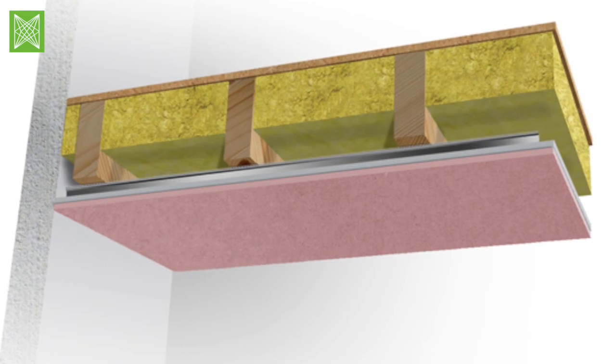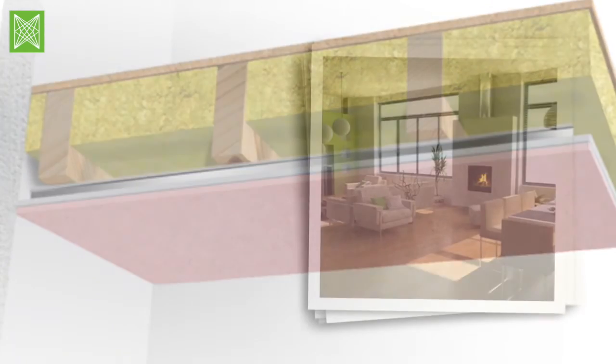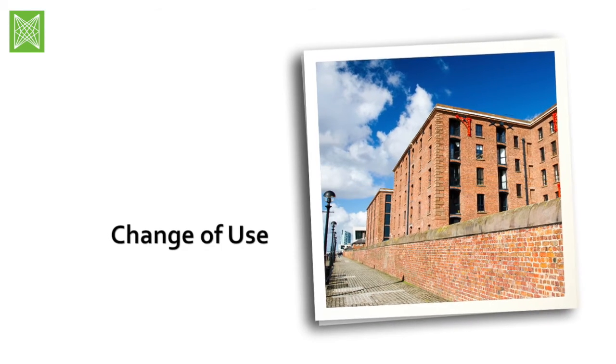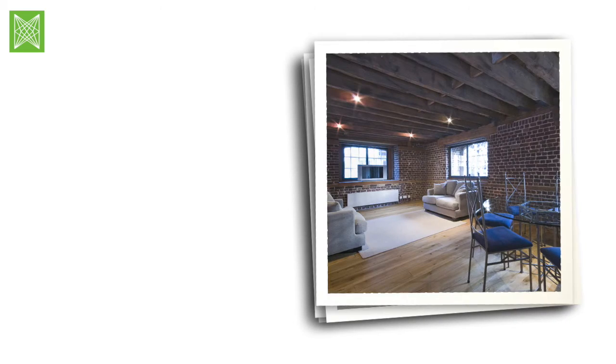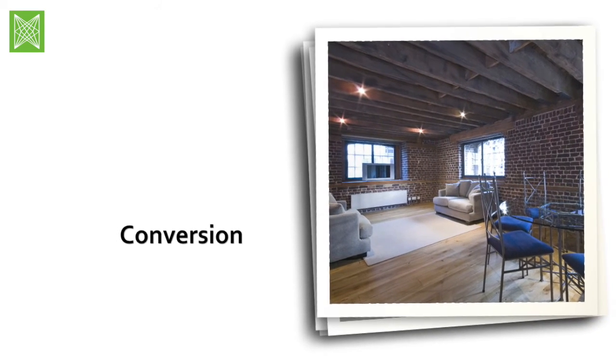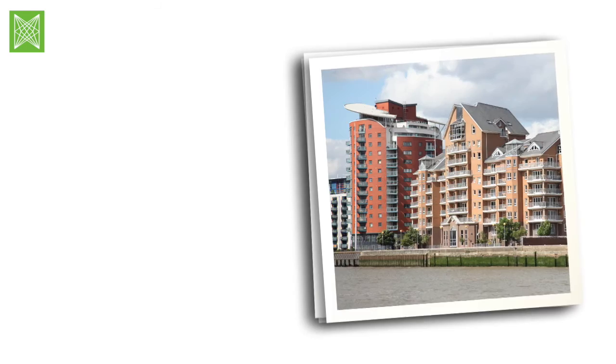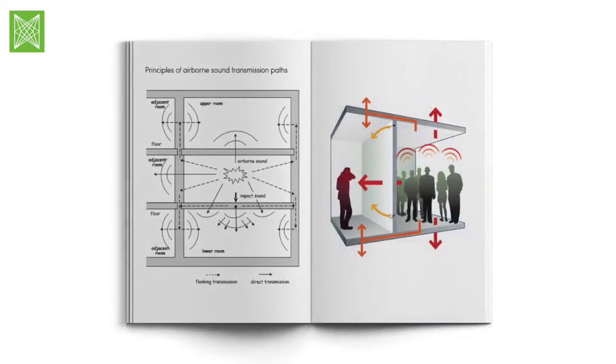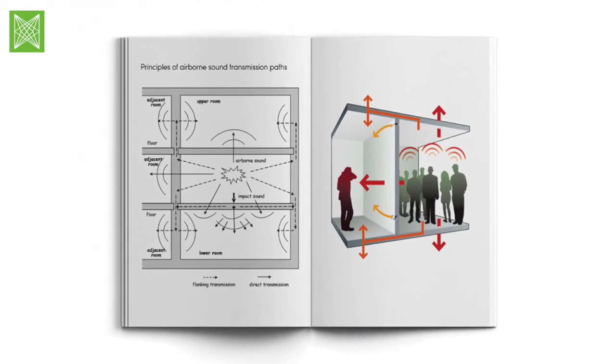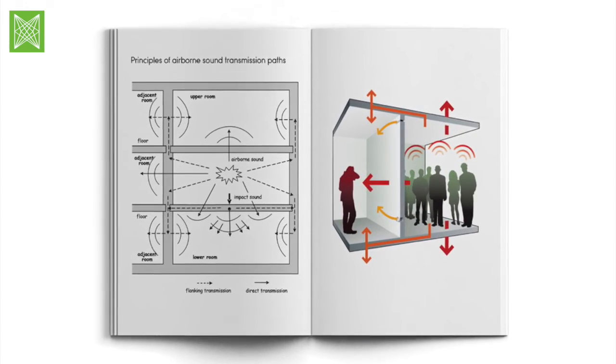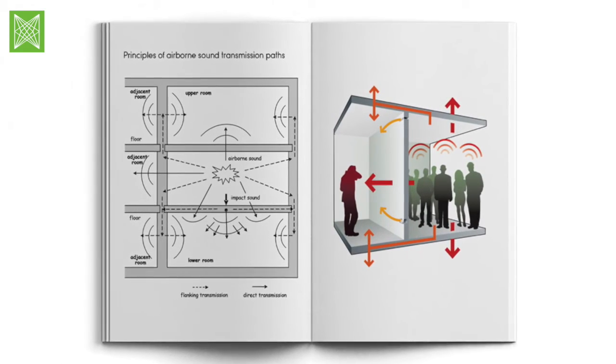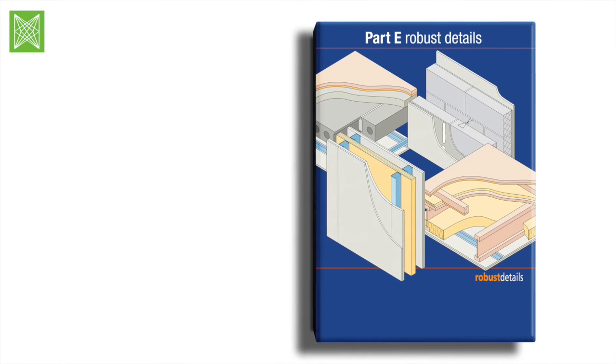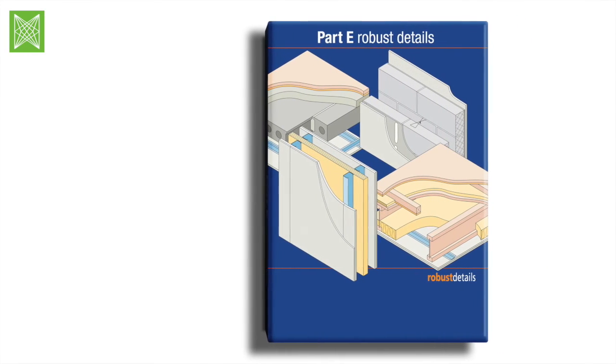The Hush Bar Resilient Bar system is used extensively within refurbishments, change of use, or new build projects as part of a sound insulation system for separating ceilings and walls. Features include suspending 30 kilograms per square meter of plasterboard at 600mm centers, reduces both airborne and impact sound transmission, and helps achieve all UK building regulations and robust detail parameters.